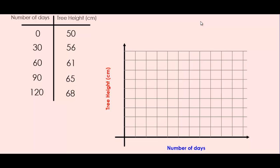One block every 10 days might seem like a reasonable scale. However, because we only have 11 grid lines, we won't be able to represent 120 days on the graph, so we need to choose a different scale. For example, we can choose a scale where every block represents 15 days, or every 2 blocks represents 30 days. And here's how we can label it.